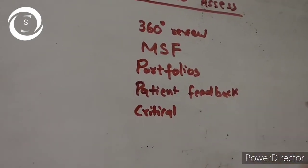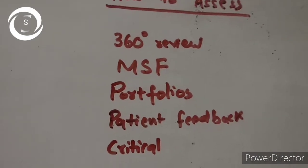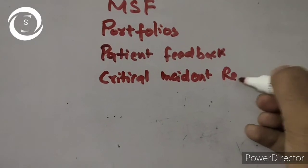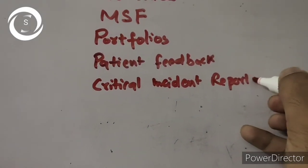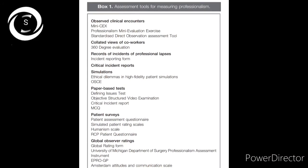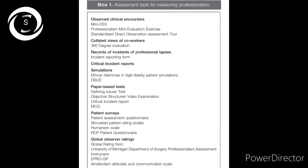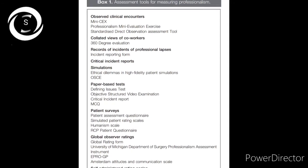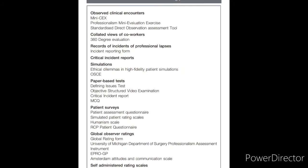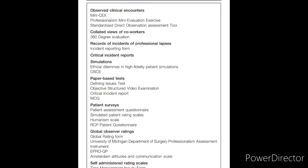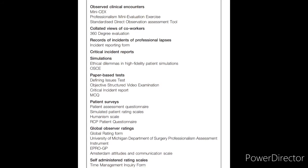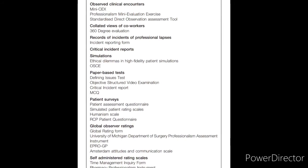Here I have shown a chart of how to assess professionalism: mini clinical evaluations, professionalism mini evaluation exercise, standardized direct observation assessment tool, collateral views of coworkers, 360-degree evaluation, records, critical incident reports, simulations, paper-based tests, patient surveys, global observer rating scales, and self-administered rating scales. All these can be used to assess professionalism.